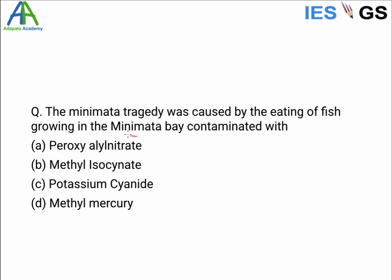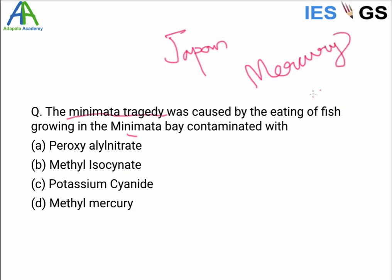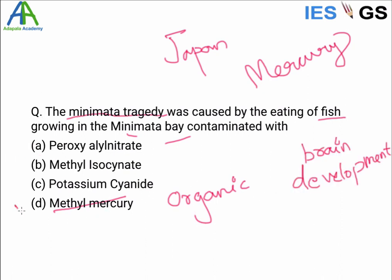The Minamata tragedy was caused by eating fish from Minamata Bay contaminated with mercury. This is an important topic in environmental pollution. The tragedy happened in Japan, and an international convention — the Minamata Convention — was subsequently established on production, usage, and prevention of mercury contamination. The mercury involved was methyl mercury, an organic compound that bioaccumulates and biomagnifies. Fish in the bay were contaminated with effluents from nearby industries, and people who consumed the fish suffered mercury poisoning. The answer is methyl mercury.